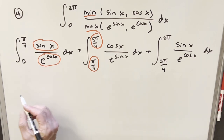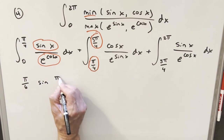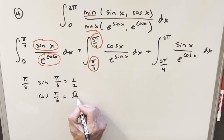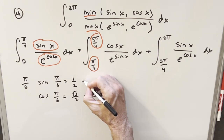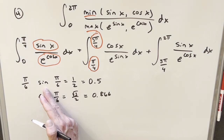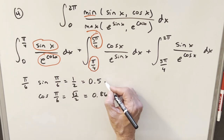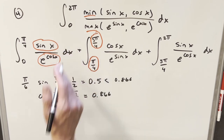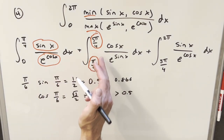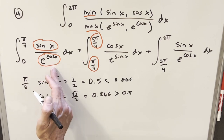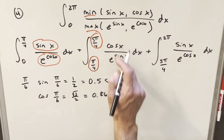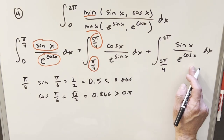For example, in the first region we can test at pi over six: sine of pi over six is one half (about 0.5), while cosine of pi over six is square root of three over two (about 0.866). Since 0.866 is greater than 0.5, cosine x is greater in this region. So the min in the numerator is sine x, and the max in the denominator is e to the cosine x. It then switches in the middle region — min is cosine x and max is e to the sine x — and switches back after five pi over four.